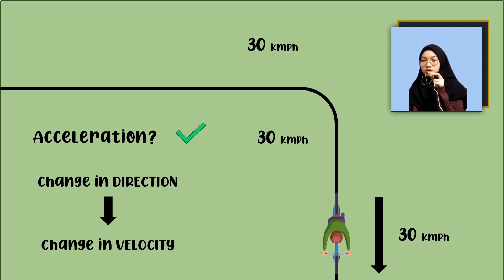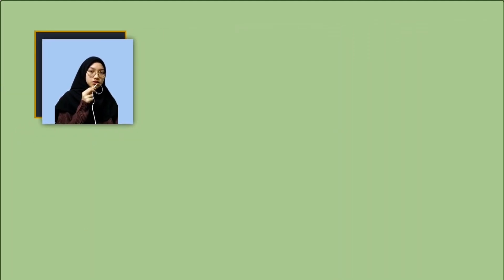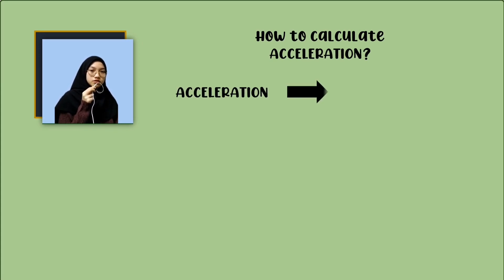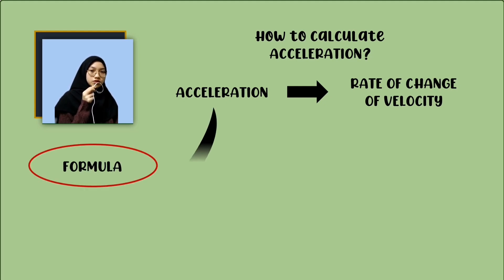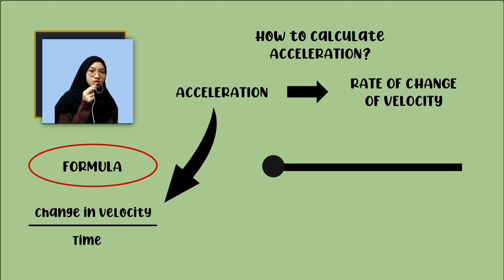This was the most important concept you had to know about acceleration. Take note, the acceleration exists only when there is a change in velocity. But how to calculate acceleration? Acceleration is defined as the rate of change of velocity. In terms of formula, acceleration can be written as change in velocity over the time taken. If the velocity of an object changes from an initial value U to the final value V in time T, then acceleration A can be written as V minus U over T.